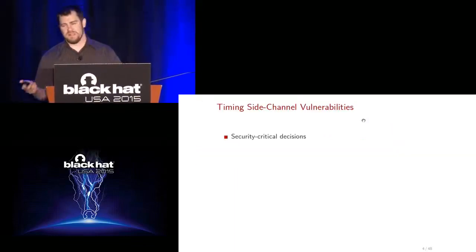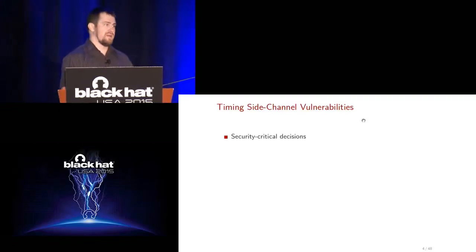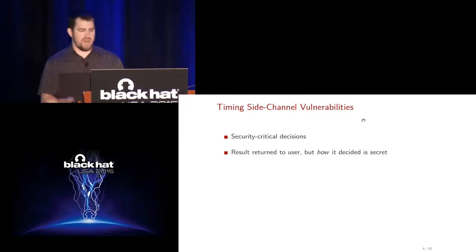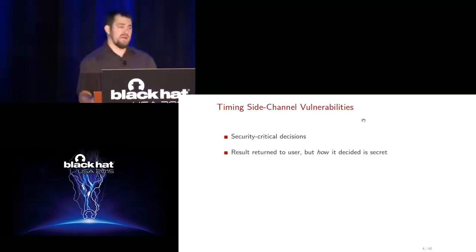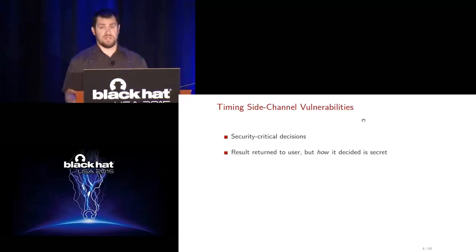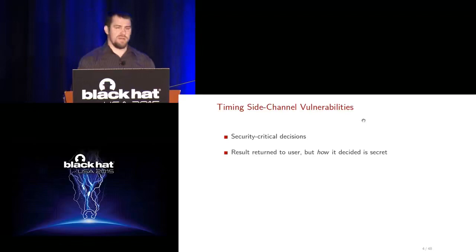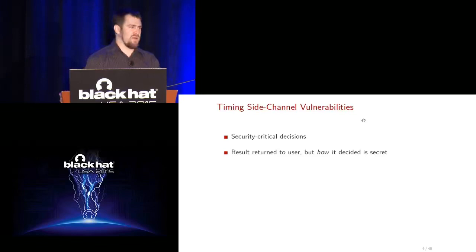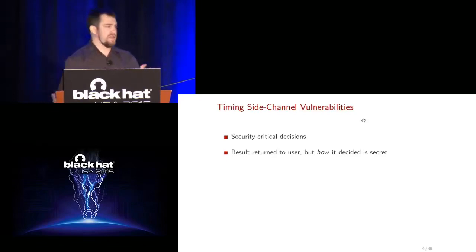What are timing attacks? Just about any piece of software has situations where it needs to do some kind of security-critical operation — things like authentication, authorization checks, or cryptography. In those situations it's really important that the application may return the result of that operation — whether success or failure — to the user, but it's critical that the details of how the decision was made are not exposed. For example, if a web application tells you 'the password's wrong, you messed up character three,' you could guess the password one character at a time.